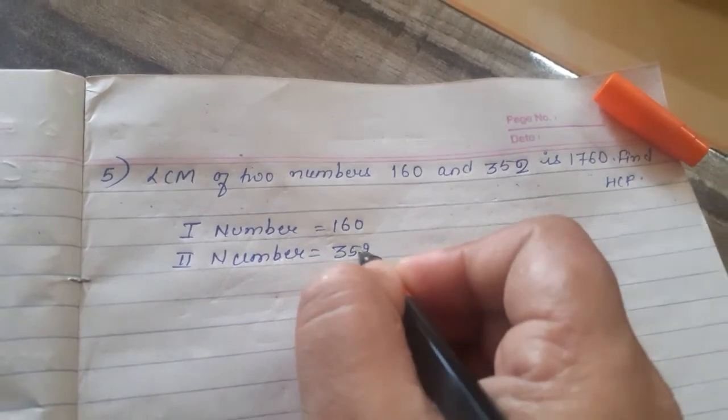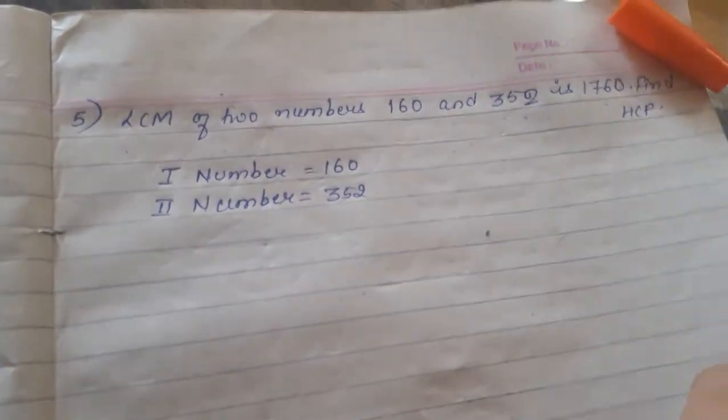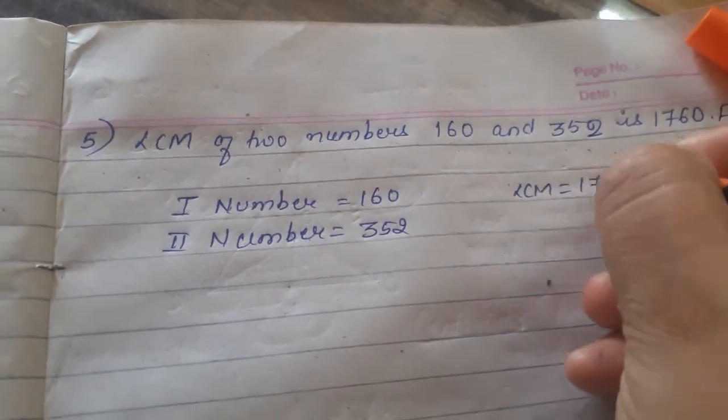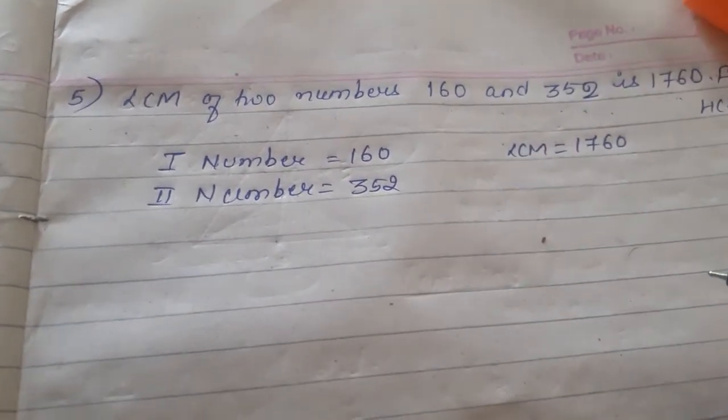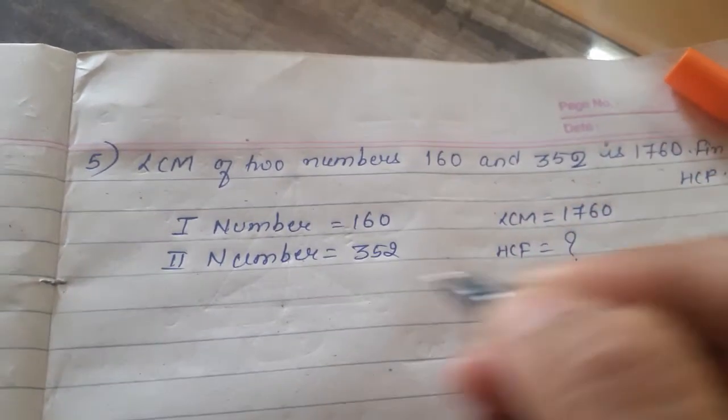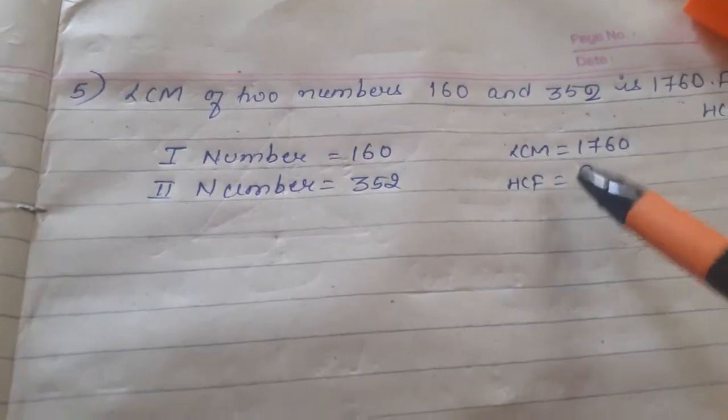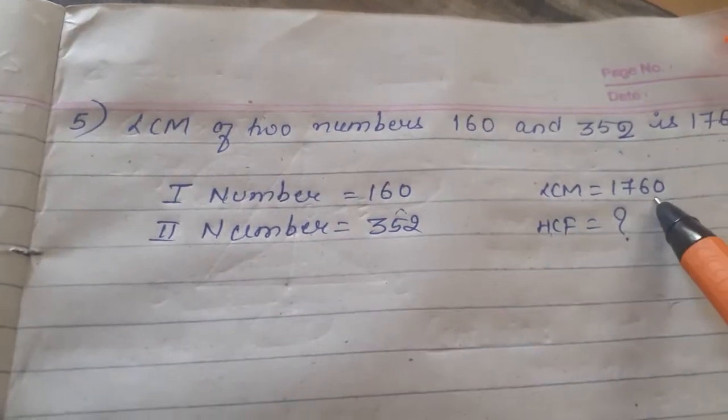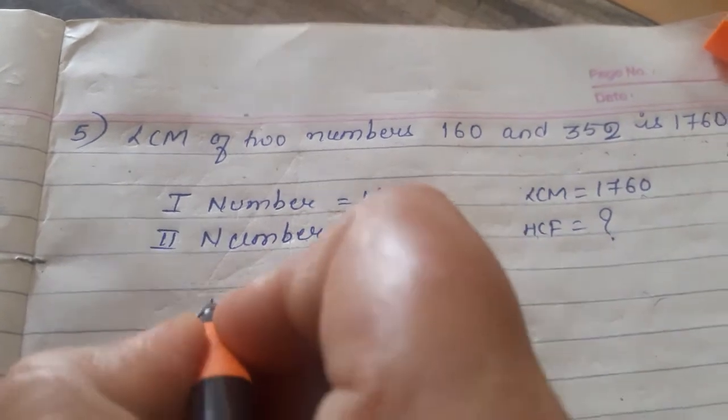You can find out their product also, or it's actually not required. LCM is given as 1760, and we have to find out the HCF. I have told you that whenever we need to find HCF, if we multiply the numbers and divide by LCM, we will get the HCF value.